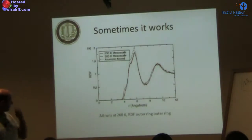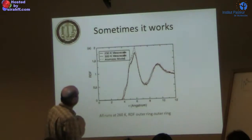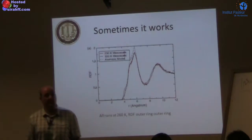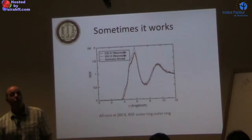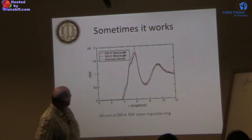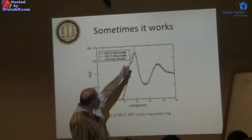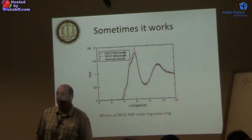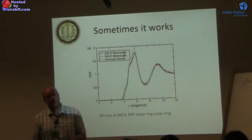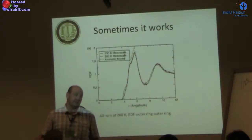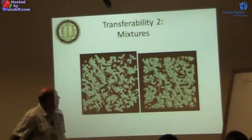Sometimes it actually works partially. The red line is the atomistic model; the two black lines are the 230 K and 300 K optimized coarse-grained models, all simulated at 260 K. There is a difference — no question about it — and which one behaves better depends on the distance: at local distances, 230 K behaves better, and at larger distances, 300 K behaves better. So in this case, we have about 30-40 Kelvin of play around the parameterization state point, but you cannot transfer really across the glass transition temperature.